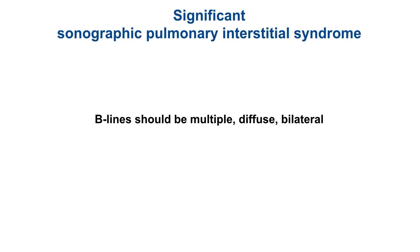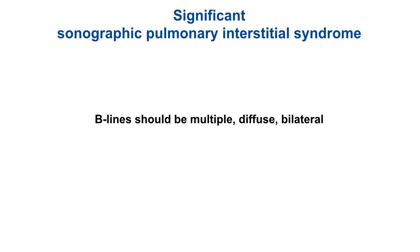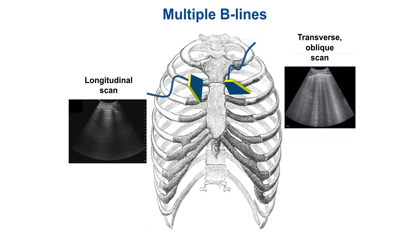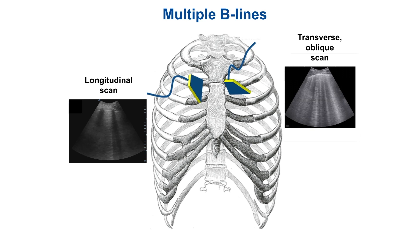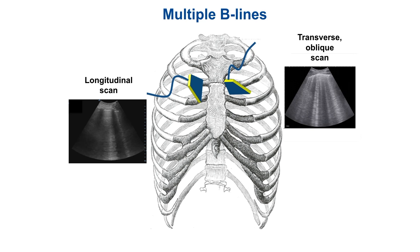A positive examination for B-Lines needs the presence of multiple, diffuse, and bilateral B-Lines. Multiple B-Lines means at least three B-Lines between two ribs when applying the probe longitudinally, or at least three close B-Lines along the intercostal space when applying the probe obliquely.